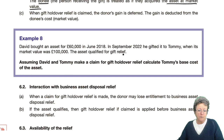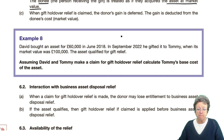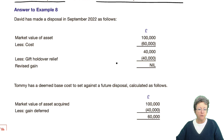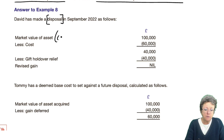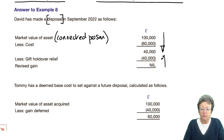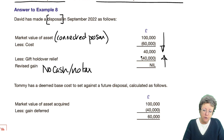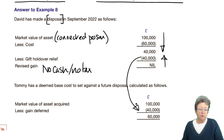Example: David bought an asset for £60,000 in June 2018. In September 2020, he gifted it to Tommy when it was valued at £100,000. Assuming they make a claim for gift holdover relief, the connected persons transaction means we calculate the gain from market value less cost. There is no cash, no tax — the whole thing is relieved using gift relief, which is then removed from the market value on acquisition, giving a base cost of £60,000.